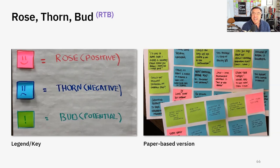Thorn, just like it sounds, might hit you or prick you on the skin — it might have a negative connotation. It could be something you know exists but you have to negotiate around it. But it doesn't always have to be negative; it could be a challenge, a challenge that's worth solving for.